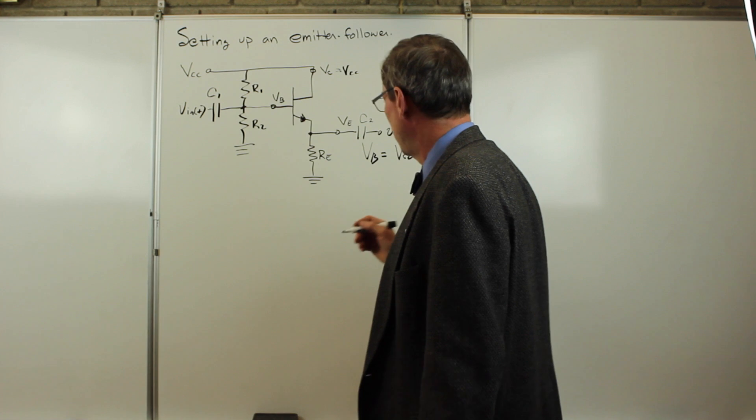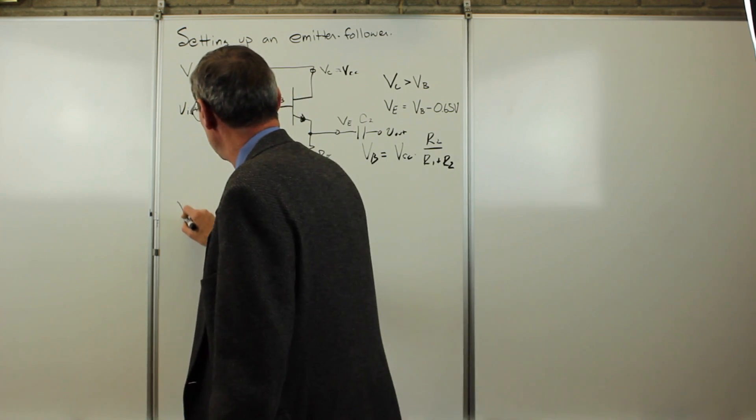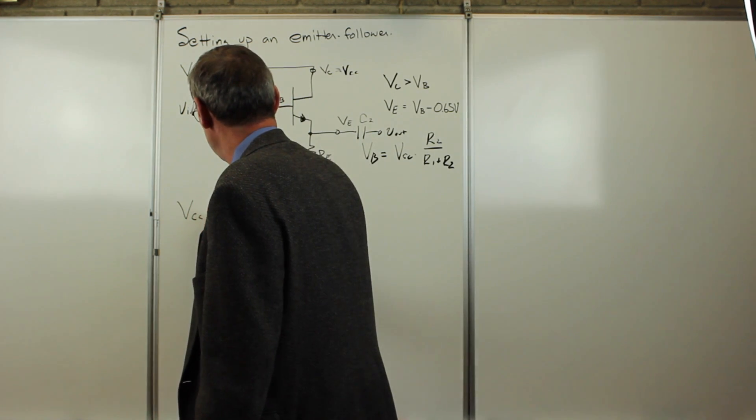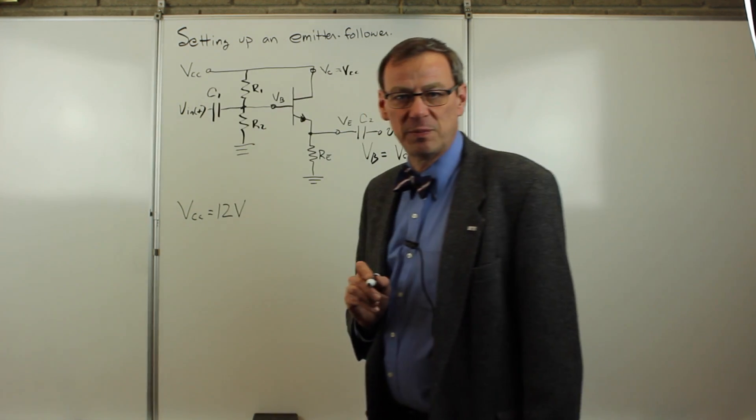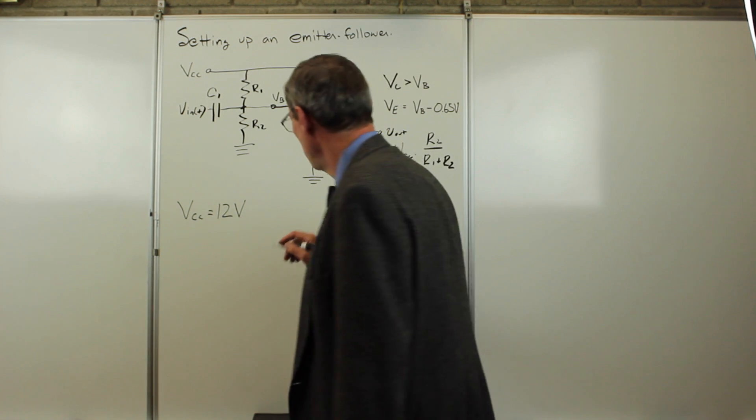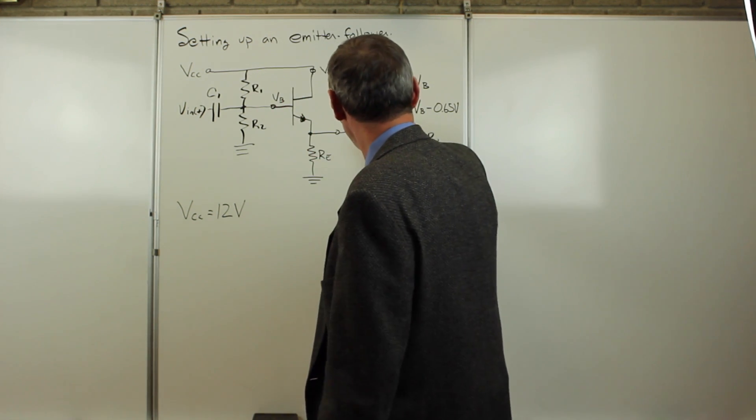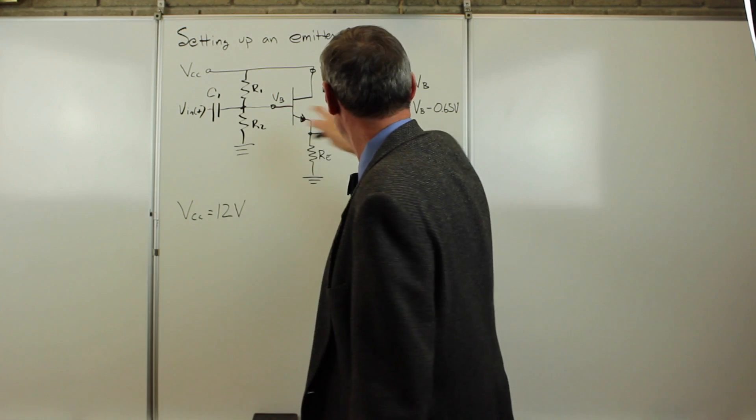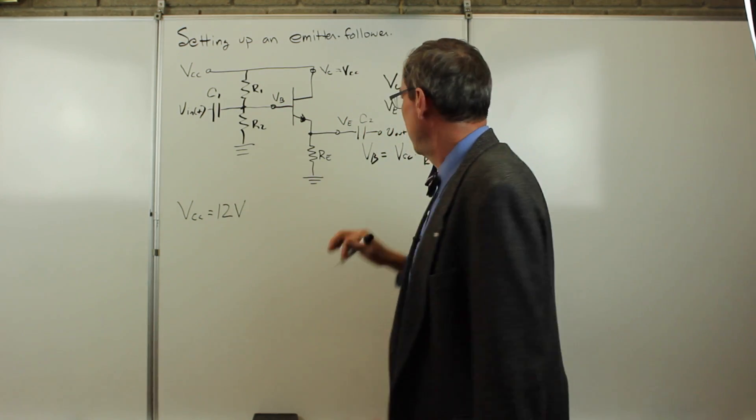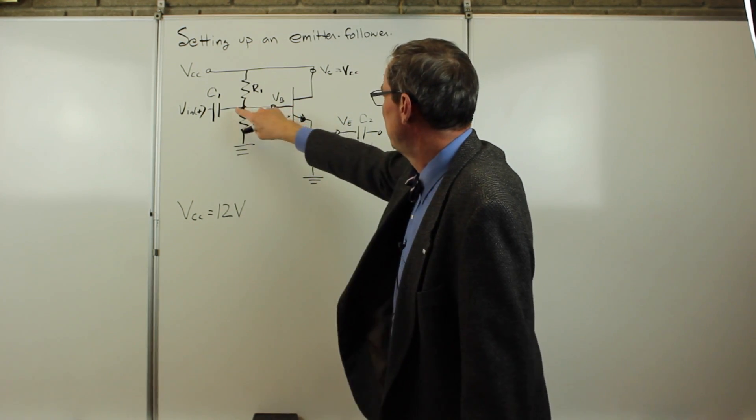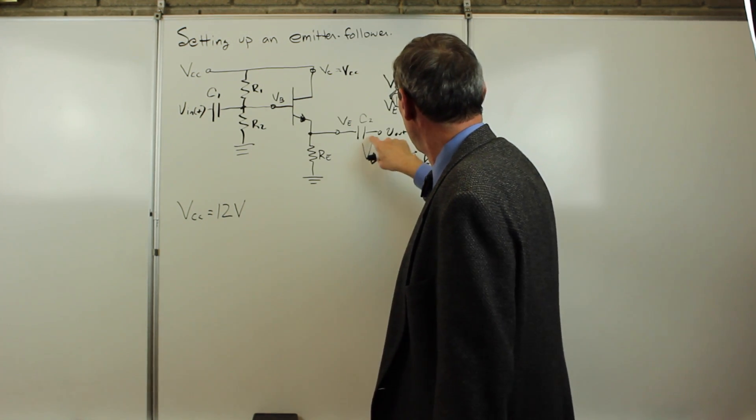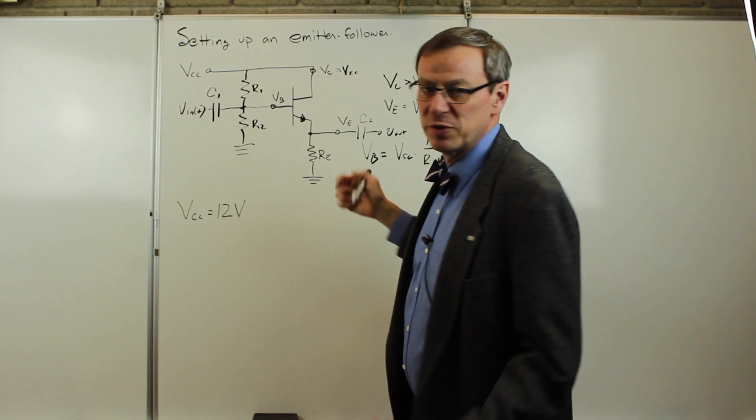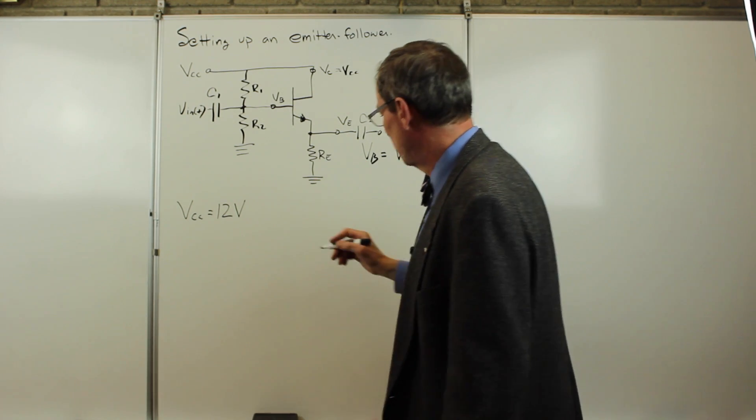Let's assume that VCC is 12 volts. We have an AC signal on both the input and the output. That AC signal added to the input can't go above VCC, and on the output we can't drop below zero. So there's some limits on what we can do.